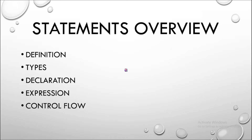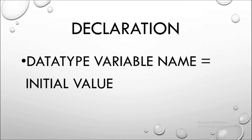Now we'll go over what a declaration statement is. A declaration statement is used to declare a variable so that the compiler knows the variable has been declared and knows its data type. First you mention the data type of the variable, then the variable name, then an equal sign followed by the initial value of the variable, and then a semicolon.